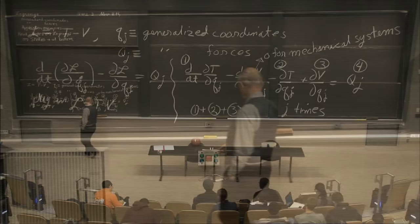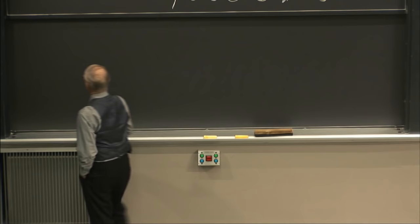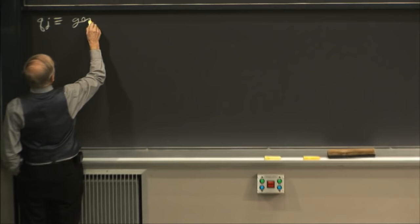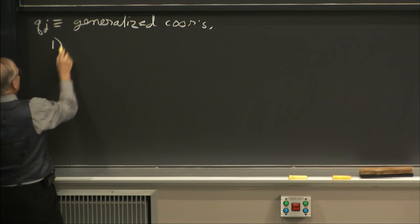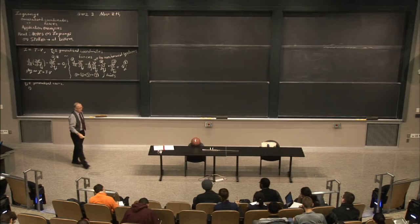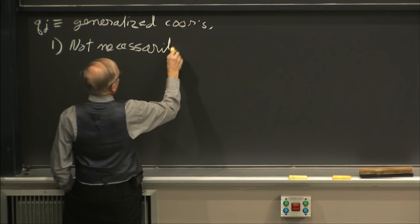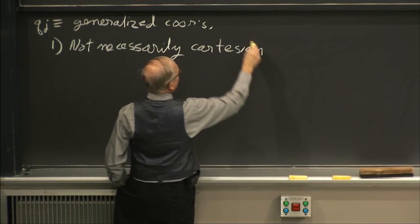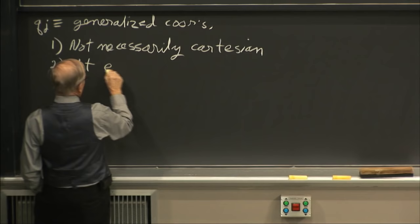Now we need to talk about what we mean by generalized coordinates. What does the word 'generalized' mean? It just means it doesn't have to be Cartesian — not necessarily Cartesian as in X, Y, Z. You have a lot of liberty in how you choose coordinates: not necessarily Cartesian, not even inertial.